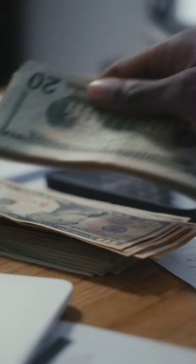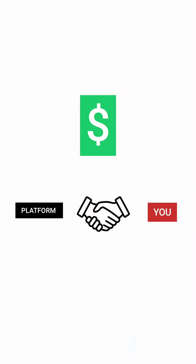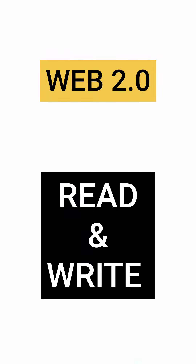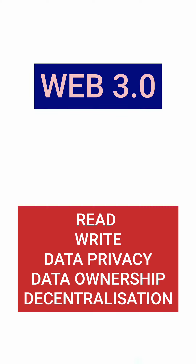For example, if you are on web 3.0 and you upload a Reel on Instagram, that Reel is totally owned by you. The platform can't do anything with it. You can earn money on it, monetize it, or even give the ownership of that Reel to some platform to earn money. In web 2.0 all you did was read and write, but in web 3.0 you can read, write, have better privacy, ownership of your data, and decentralization.